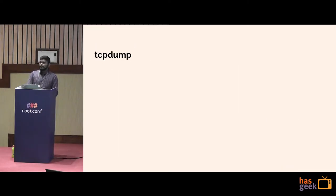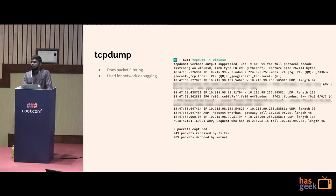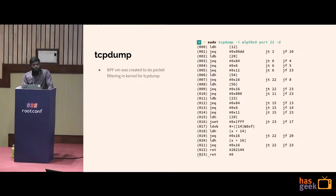How many people have heard about or used TCPdump? TCPdump does packet filtering and is used for network debugging — it traces packets coming into the kernel, filters them, and returns results to user space. The original TCPdump program used something called BPF, so you've been using BPF without even knowing it. BPF is the virtual machine doing the packet filtering for TCPdump and returning results to user space.